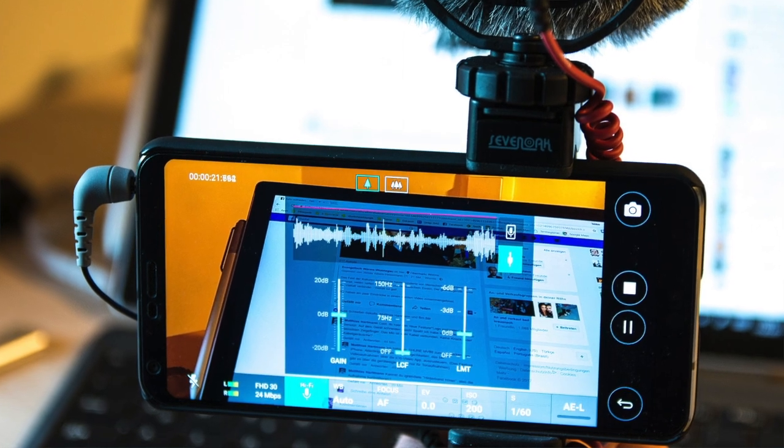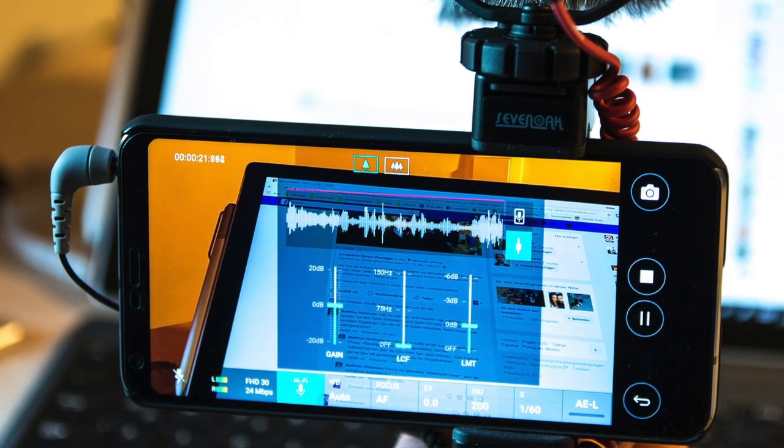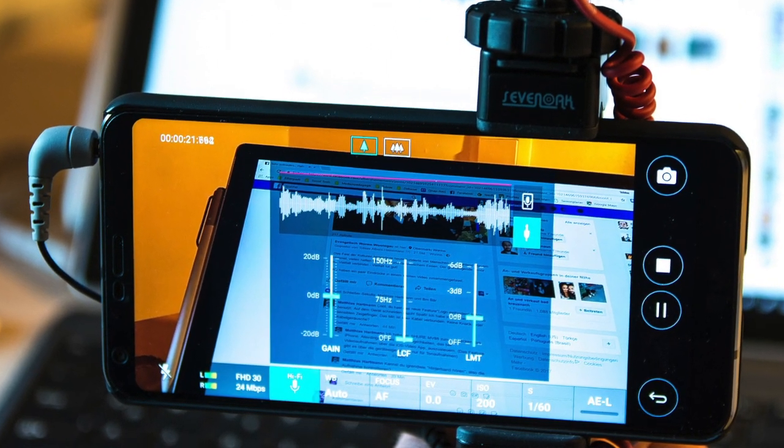So some basic things that you need to bear in mind when you're creating video. Obviously, if you're using your mobile phone, the cameras in these mobile phones are quite powerful. So you're able to create a high definition quality of video that most people will be happy to watch on YouTube.